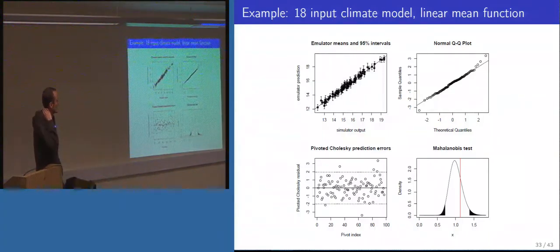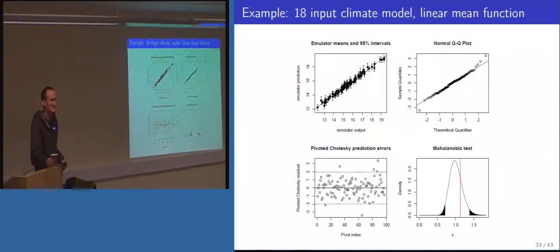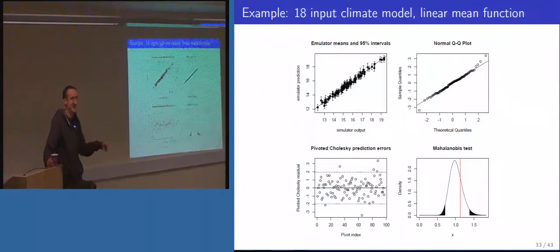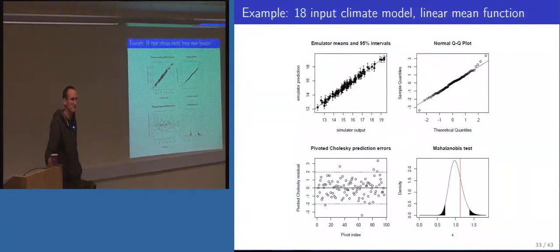All of this is valid for non-emulator modelling as well — you could apply these validation techniques for general regression on a dataset. The main distinction is that the very standard stuff assumes independent observations, whereas with a Gaussian process you're not treating data points as independent. There hasn't been so much work on validation and calibration of Gaussian process models in general, but these techniques apply broadly. Regarding scoring rules like proper scoring rules — they decompose into sharpness and calibration — I've never really used them in anger, and they're perhaps more suited to independent predictions.